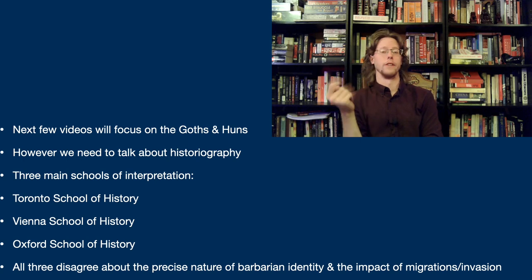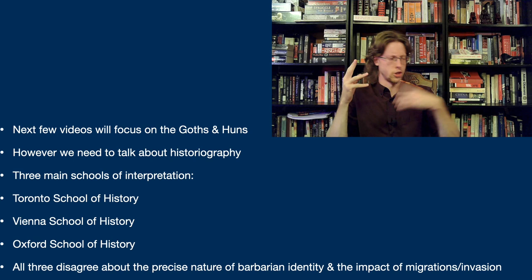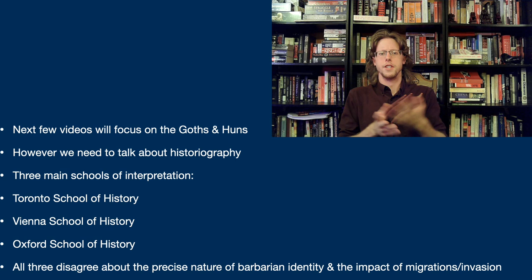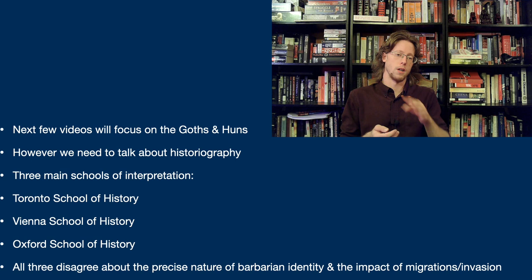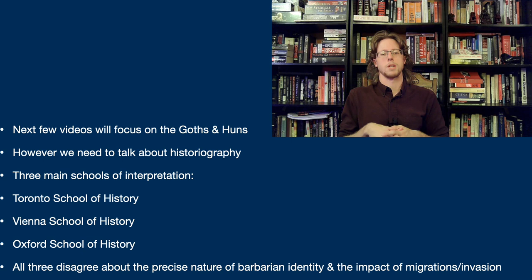Now that we've covered the migration period in broad strokes and talked about Christianity and a couple of other things, in the next chunk of this series we're going to talk more about the individual groups of people that moved into the Roman Empire. We're also going to look at the Roman Empire itself in the historiography of the subject. But for this video, I want to talk about the Goths and a little bit about the Huns — and to do that, we've got to talk about the historiography of the subject.